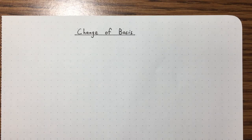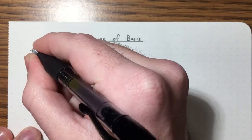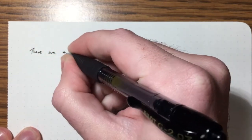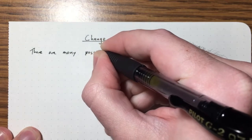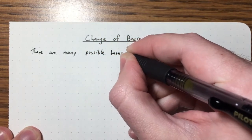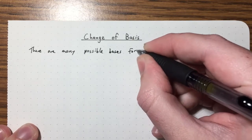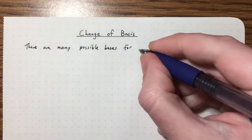So what's the idea of change of basis? Well, you should always keep in mind that there are many possible bases for any space — let's say R^n. So there are many possible bases for R^n.